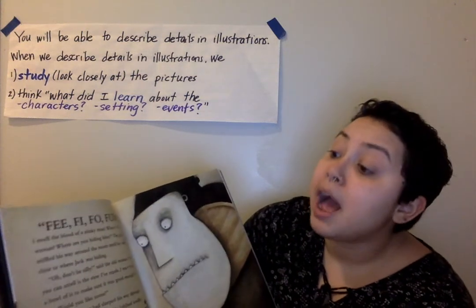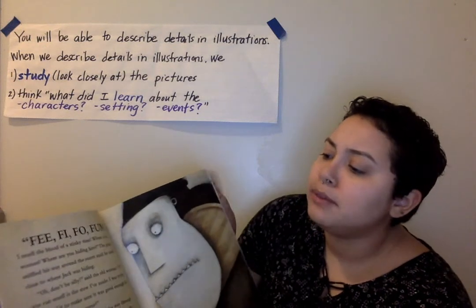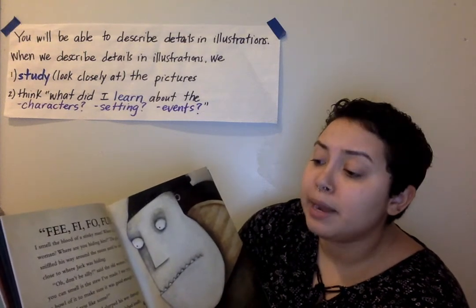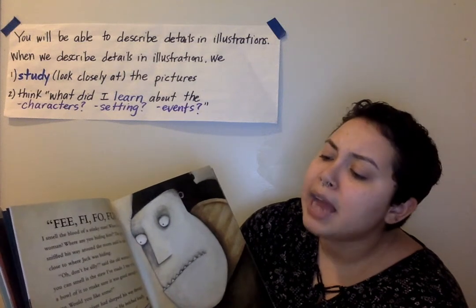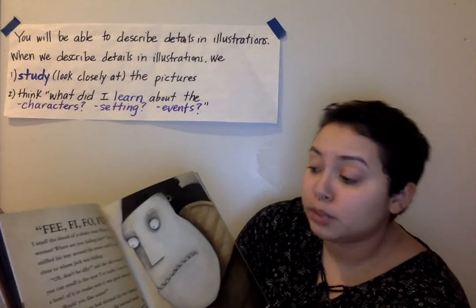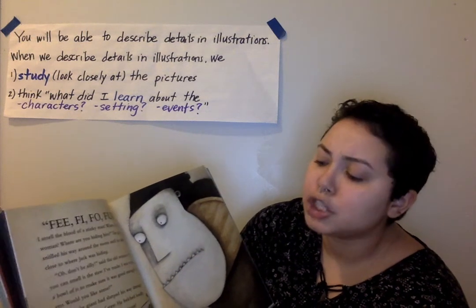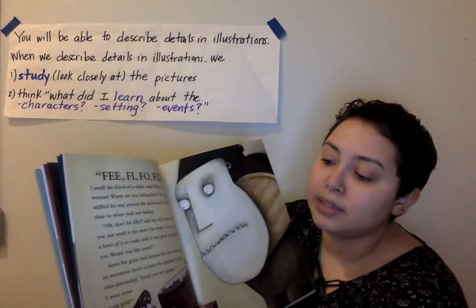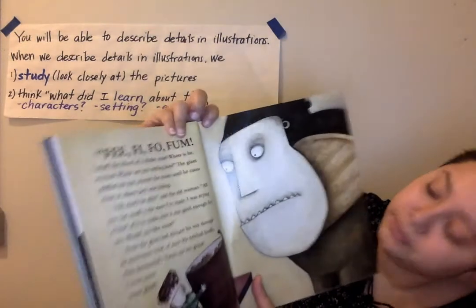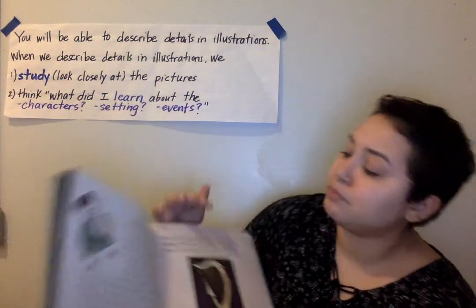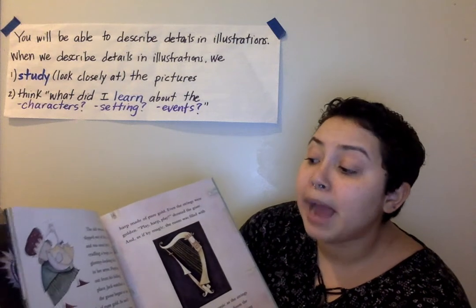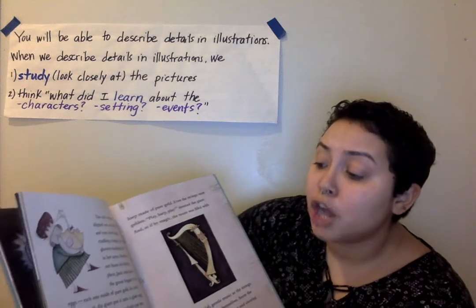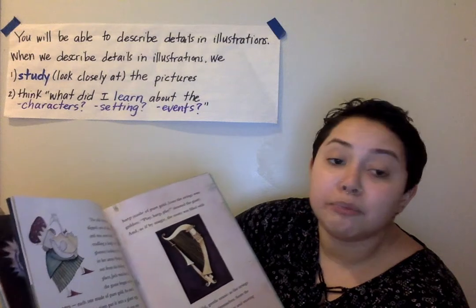"Fee-fi-fo-fum. I smell the blood of a stinky man. Where is he, woman? Where are you hiding him?" The giant sniffed his way around the room until he came close to where Jack was hiding. "Oh, don't be silly," said the woman. "All you can smell is the stew I've made. I was trying a bowl of it to make sure it was good enough for you. Would you like some?" Soon the giant had slurped his way through an enormous bowl of stew. He belched loudly and then demanded, "Fetch my goose. I want some more gold." The old woman slipped out of the room and was soon back, cradling a huge, very gloomy-looking bird in her arms. Peeping out from his hiding place, Jack watched as the goose began to lay eggs — each one made of pure gold.